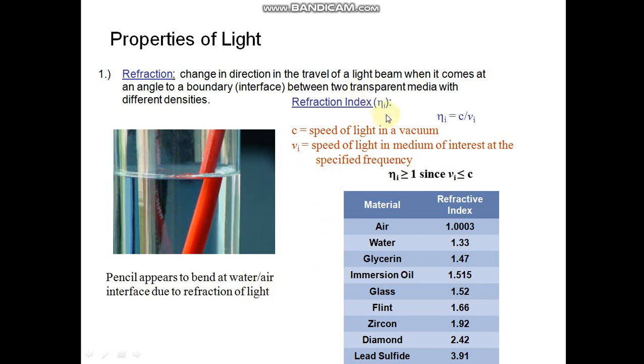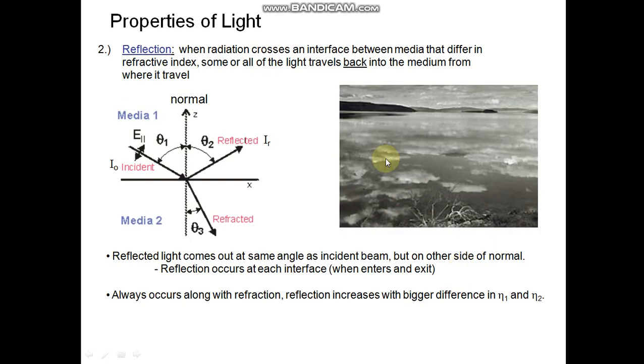Refraction index Eta. Eta is equal to c upon v. C is the speed of light in vacuum, V is the speed of light in medium of interest at the specified frequency. Value of eta is always greater than equal to 1 since v is less than equal to c.